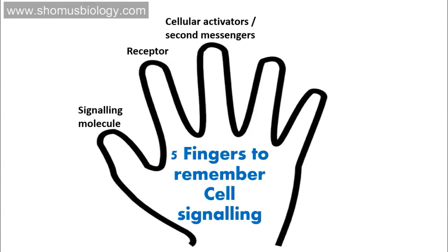The third important parameter is the cellular activators, which are present intracellularly, as well as the secondary messengers. Not always are second messengers in play, but there are cellular activators that build up the signal amplification cascade inside the cell cytosol. This is where we most often get confused, because so many protein names come in and they activate one another through phosphorylation or dephosphorylation.